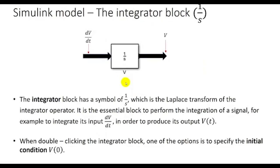The most important operator when implementing a numerical solution of differential equations is the integrator operator. It is represented in Simulink using a block with the symbol 1 over s, because 1/s is the Laplace transform of the integrator operator. It is a very essential block where the integration is performed: the input signal, assumed to be the derivative, is integrated to produce the output signal of interest — in this case, the velocity. When the integrator block is double-clicked, it is possible to specify an initial condition, such as the value of the velocity at time zero.